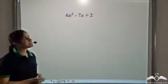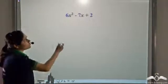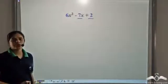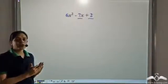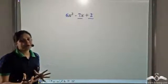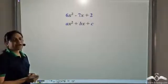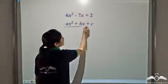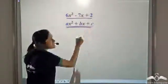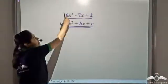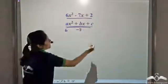Now consider the expression 6x² − 7x + 2. Can we take 6 common from here? No, because 6 is not a factor of all three terms. So we cannot take 6 common. Instead, we compare this expression to the general form ax² + bx + c, where a is the coefficient of x², b is the coefficient of x, and c is the constant. Comparing, a = 6, b = −7, and c = 2.